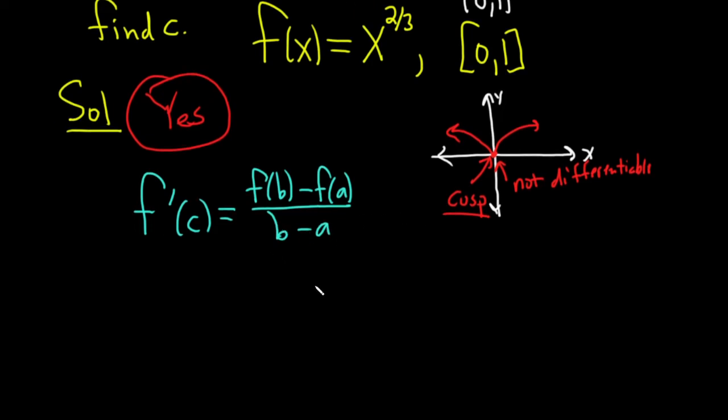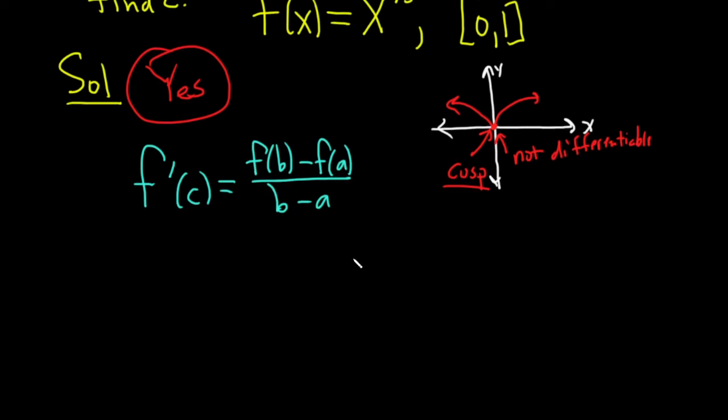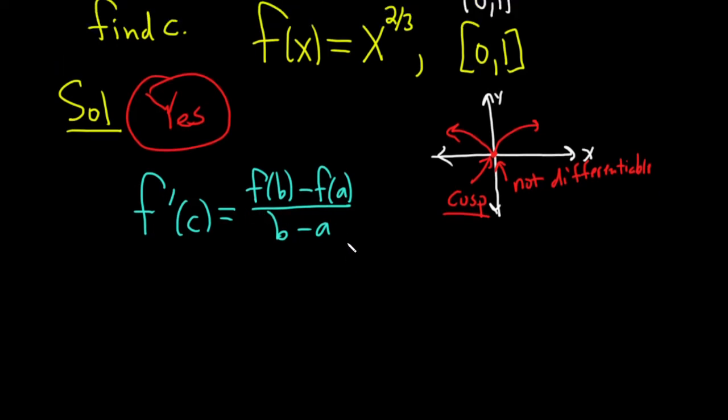So this is basically saying that one way to think about it is that the instantaneous rate of change of your function at c is equal to the average rate of change of your function over the entire interval. So there is a number c in the open interval where the instantaneous rate of change at that number is equal to the average rate of change over the entire interval. Let's go ahead and work this out.